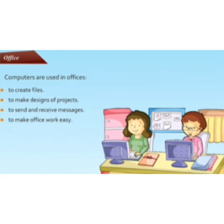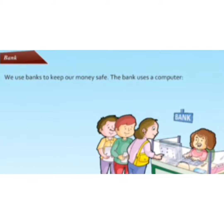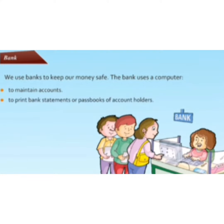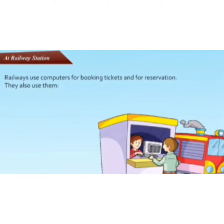At the bank, we use banks to keep our money safe. The bank uses a computer to maintain accounts, to print bank statements or passbooks of account holders. At railway stations, railways use computers for booking tickets and for reservation.